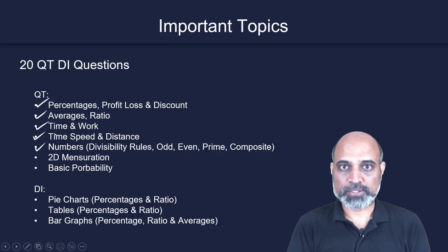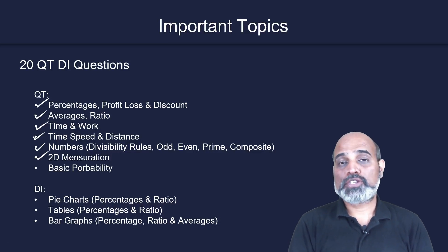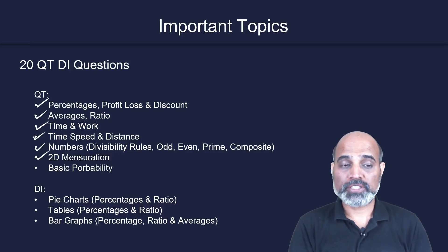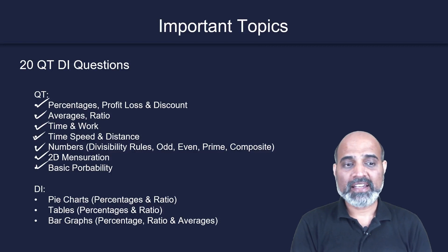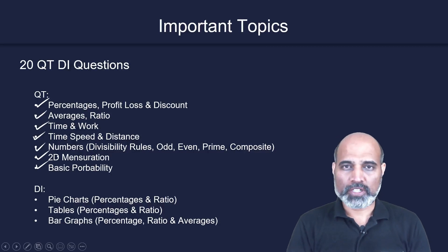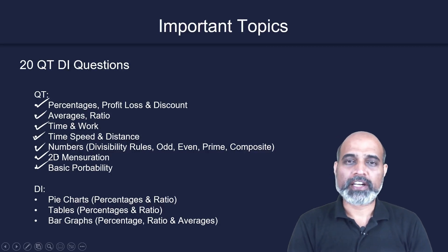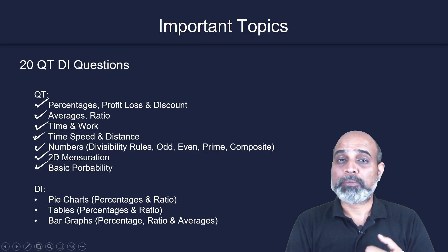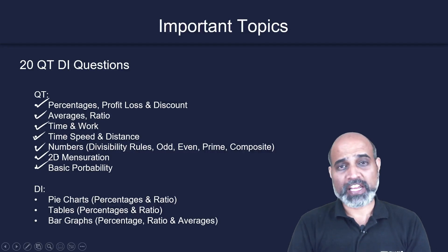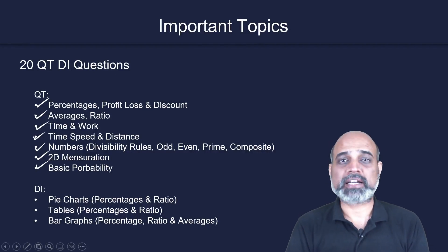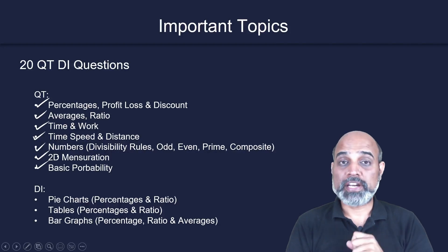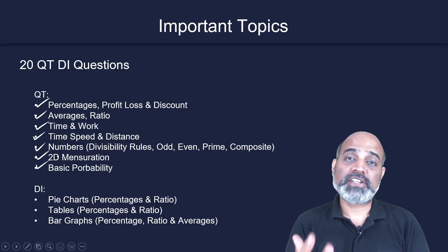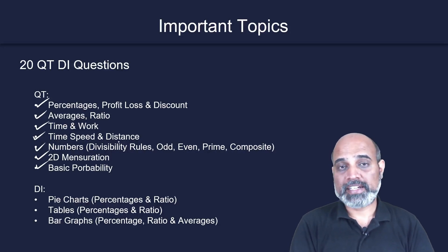2D mensuration — expect one or two questions from 2D mensuration, and around one question from probability. In probability, it's going to be a very basic question, so you don't have to study and practice advanced-level probability questions. When it comes to DI, there are majorly three types of DI that you have to practice.